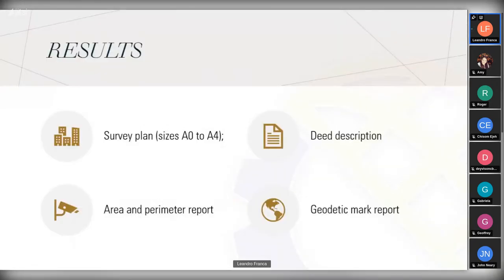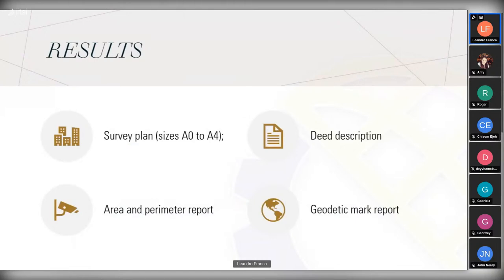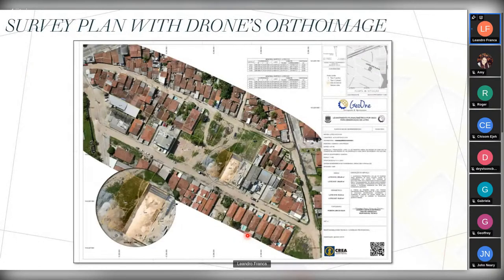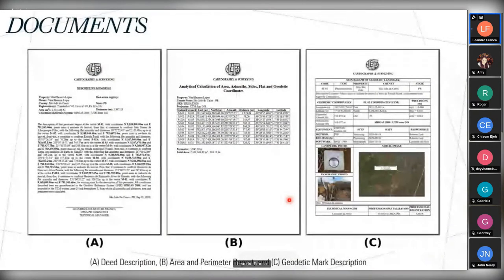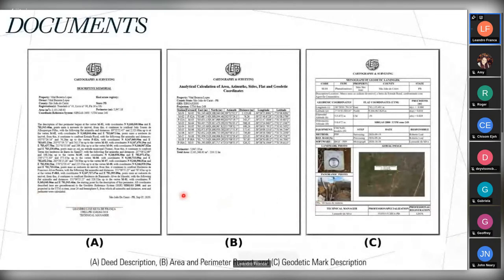Now let's see some results for survey plans and documents. Here we have a survey plan with contours showing the elevation of the terrain and hydrography. And here we have a survey plan made with drones. These are the documents I've spoken of: the description, area and perimeter report, and geodetic mark description or report.